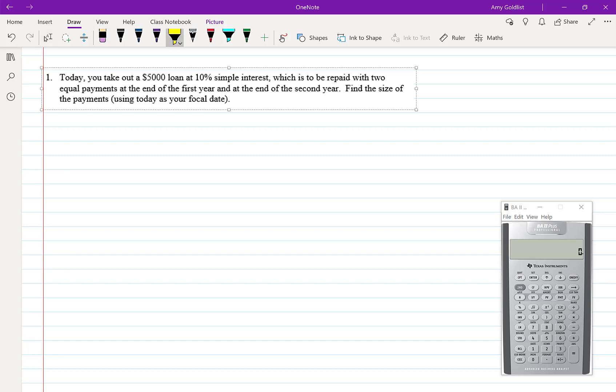So let's put in some of our items. 10% simple. These questions could deal with simple or compound interest and it's important for us to know which one. $5,000 loan and then two equal payments.